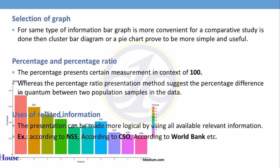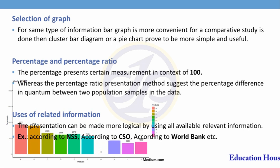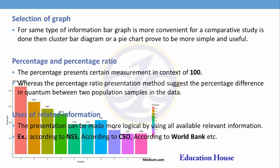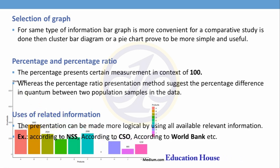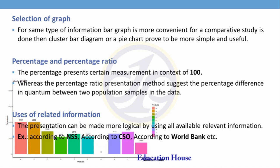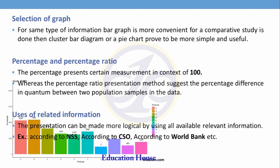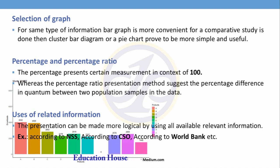For example, with two data sets — one for population and one for education — the difference between both is known as the percentage ratio. The presentation can be made more logical by using all available relevant information, such as data from NSS, CSO, or the World Bank.